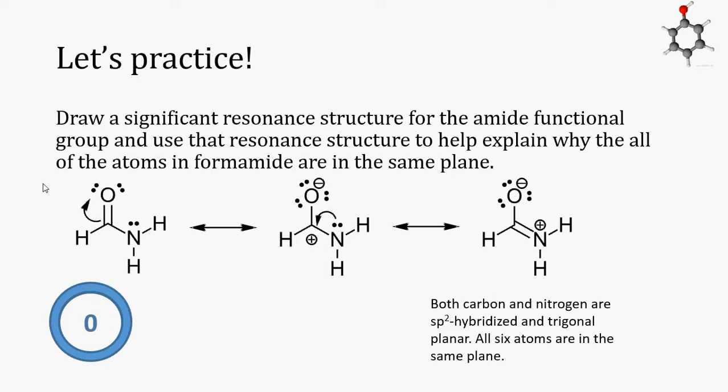The carbon atom has three bonds and no lone pairs. Remember, for counting geometry or hybridization, single bonds and double bonds are weighted equally. Likewise, the nitrogen has three groups of electrons around it. Three groups means trigonal planar. And because both atoms are trigonal planar, the things connected to them are all in the same plane.